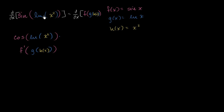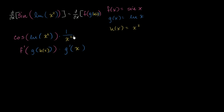We take the derivative of ln with respect to x squared. The derivative of ln(x) is 1/x, but here it's 1 over x squared — 1/x². This is g' evaluated not at x but at h(x), which is x squared. So this is g'(x²), or g'(h(x)).